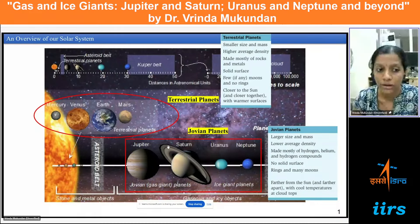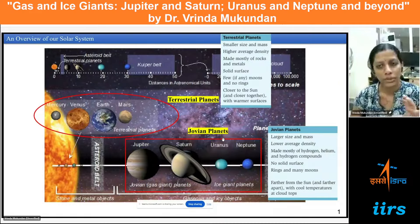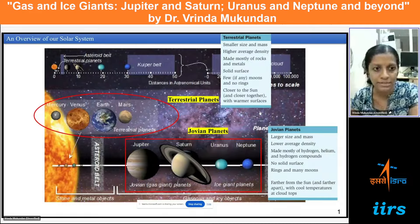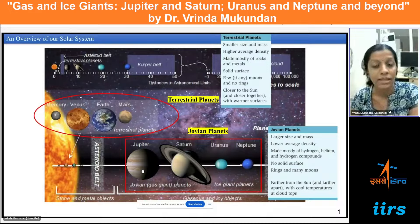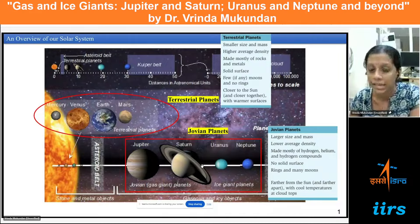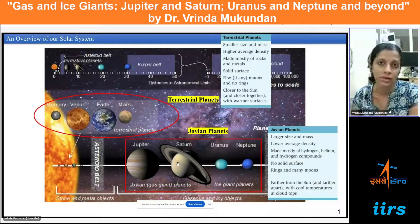The Jovian planets are also far away from the Sun and far away from each other. In short, the Jovian planets lie at the outer region of the solar system, are enormous in size, composed mainly of hydrogen, helium, and hydrogen compounds, and hence have a lower density.